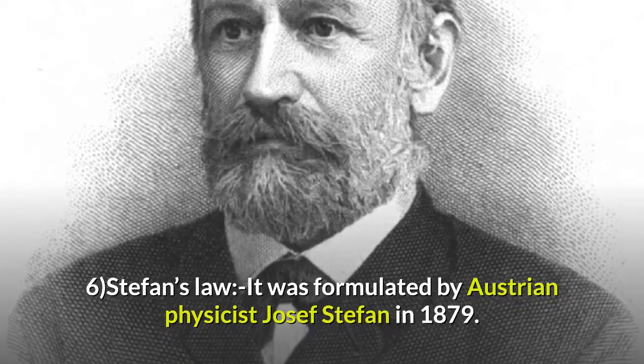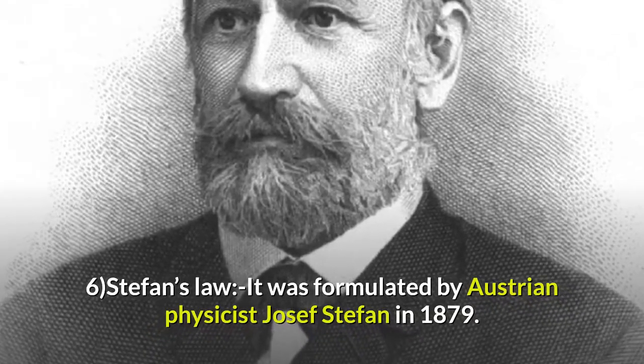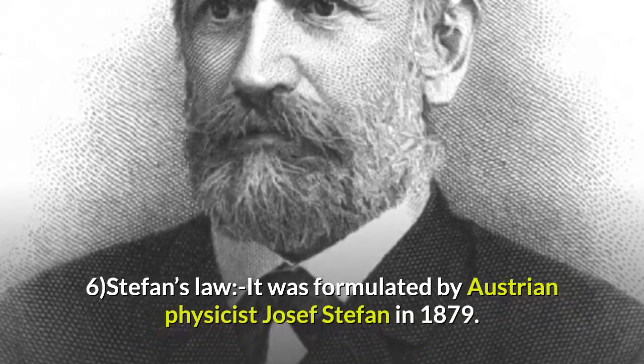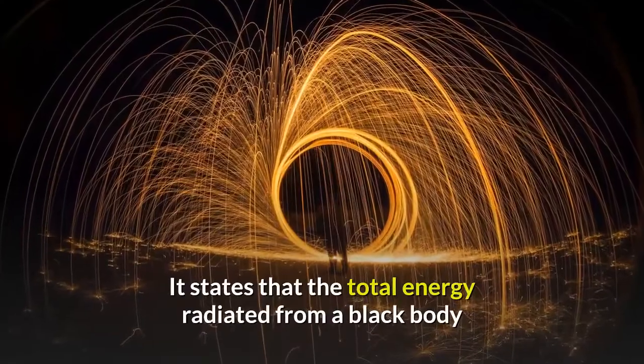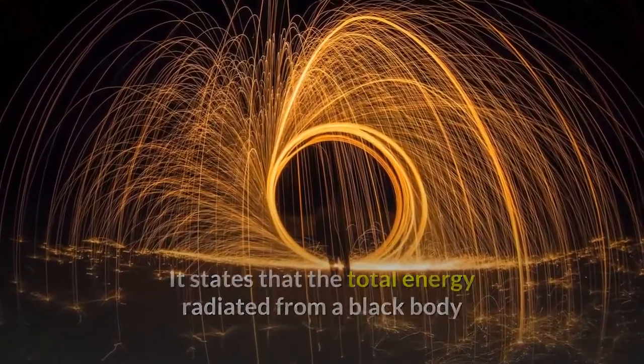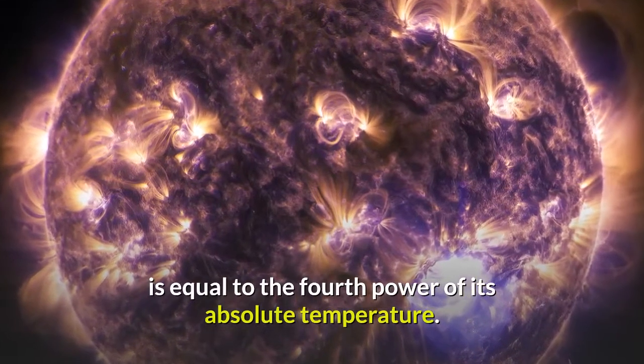Number 6: Stefan's Law. It was formulated by Austrian physicist Josef Stefan in 1879. It states that the total energy radiated from a black body is proportional to the fourth power of its absolute temperature.